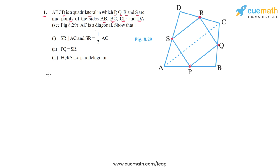In part one, we have to show that SR is parallel to AC and SR is equal to half AC. This can be proven using an application of the midpoint theorem — we are going to apply the midpoint theorem on triangle DAC. I am going to highlight this triangle for you: DAC is the triangle on which we are going to apply the midpoint theorem.